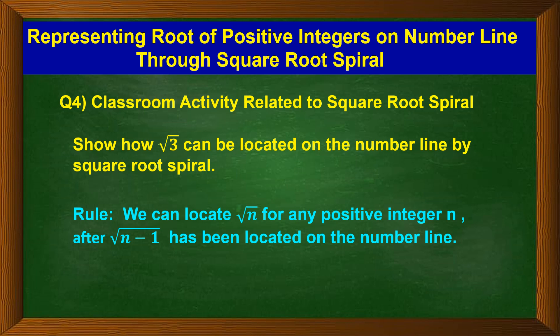To do this activity of the square root spiral, the question is: show how square root of 3 can be located on the number line using the square root spiral. I have already explained in a previous video how to represent the square root of any positive integer n on the number line, but that method was different. Now we are going to use the square root spiral method. The rule is: we can locate √n only after we have located √(n-1) on the number line.